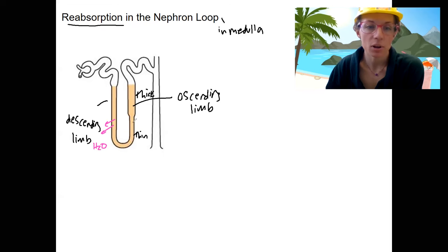The ascending limb, we're going to have ions also moving out. In this case, we're going to have sodium, chloride, potassium.